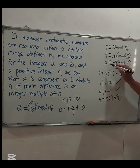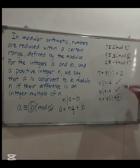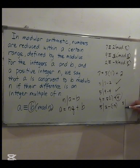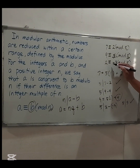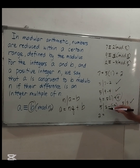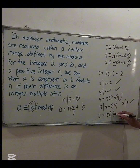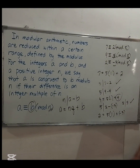Another example: 2 is congruent to negative 3 modulo 5. Applying divisibility, 5 divides the difference 2 minus (−3), which becomes 2 + 3 = 5. So 5 divides 5 — this is true. Using the division algorithm, 2 = 5 × 1 + (−3), since 5 − 3 = 2. So this is also verified.